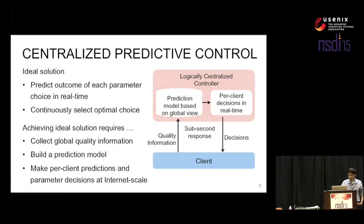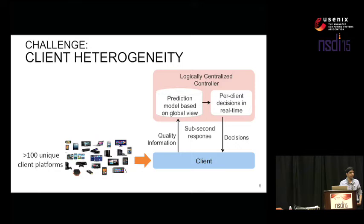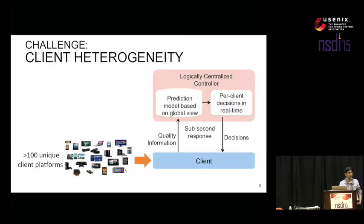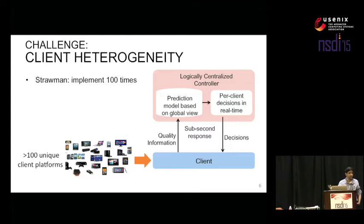Starting with the main challenges, the first one we run into is at the client layer itself, even before we can collect quality information. We've seen significant heterogeneity in the actual device platforms where consumers can watch video. We've seen over 100 unique software platforms that can be used to deliver video — and this is not including the actual hardware devices. This is purely software environments to play video across all the different devices out there.